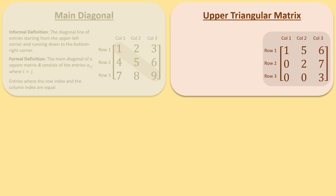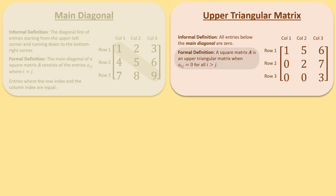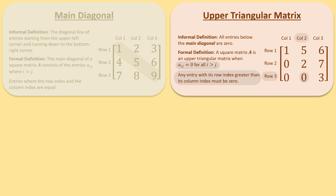A square matrix A is upper triangular if all the entries below the main diagonal are zero. Formally, a square matrix A is an upper triangular matrix when the entries A sub i j are zero for all i greater than j. Any entry with a row index greater than its column index must be zero.